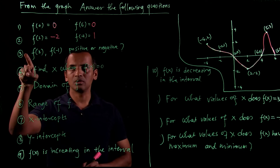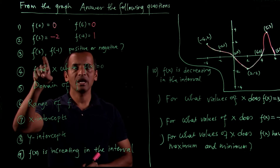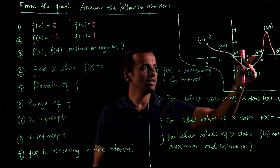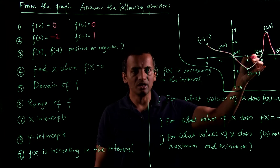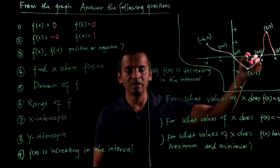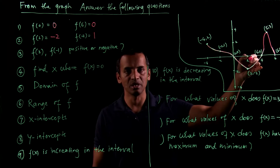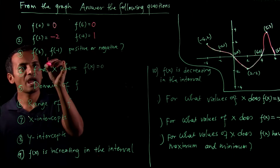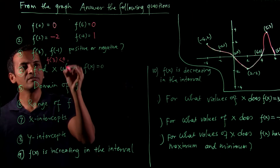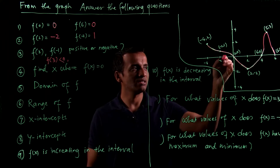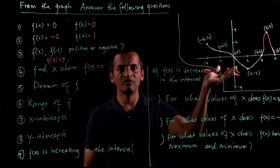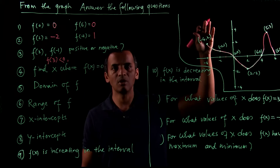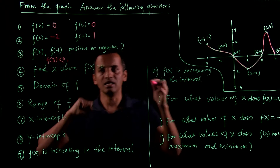Number 3 is: f(3) and f(-1) — are those positive or negative? When x equals 3, the function is below the x-axis, meaning the y-value will be negative at that time. So f(3) is negative. When x equals negative 1, the graph is above the x-axis, meaning the value of y is positive. So f(-1) is positive.